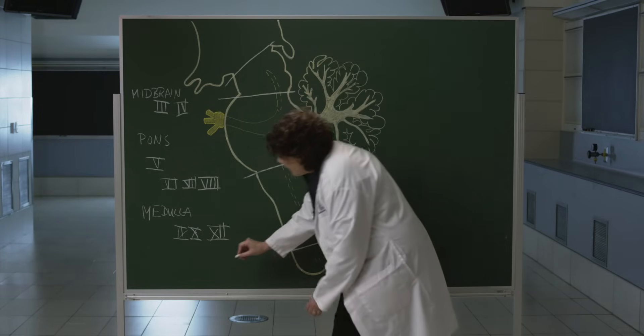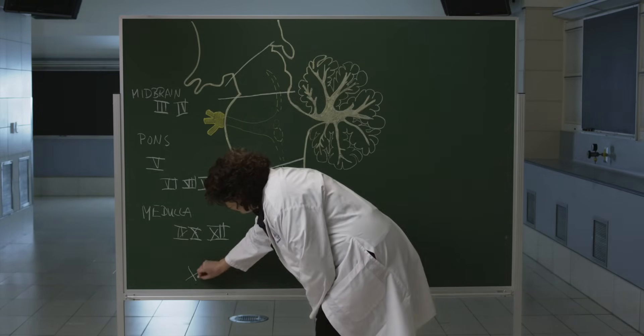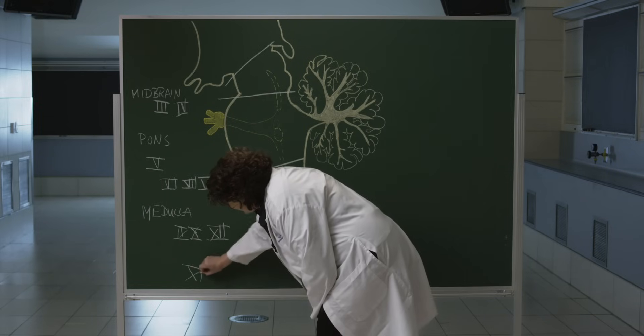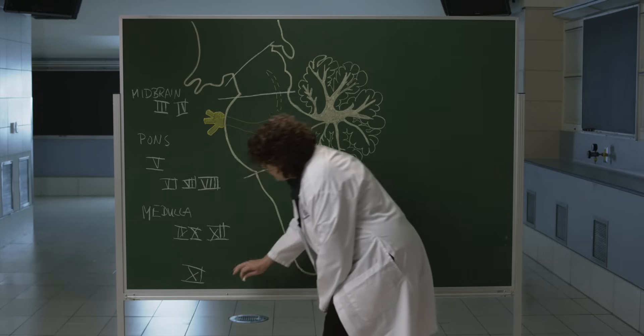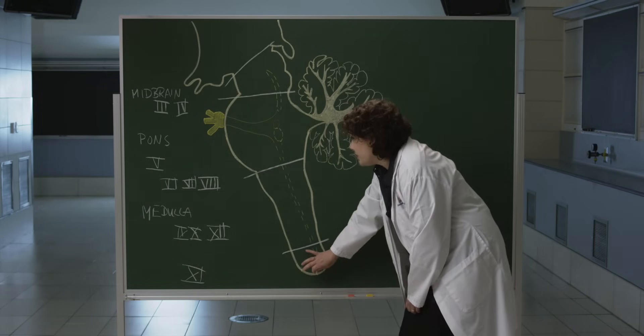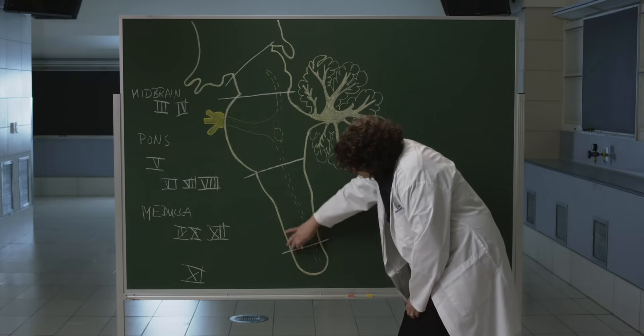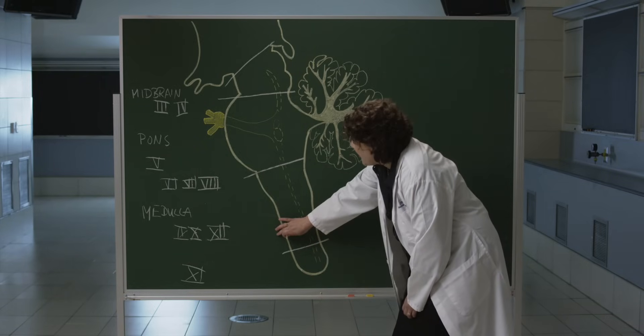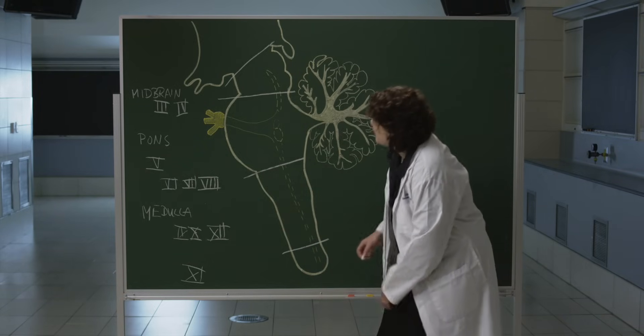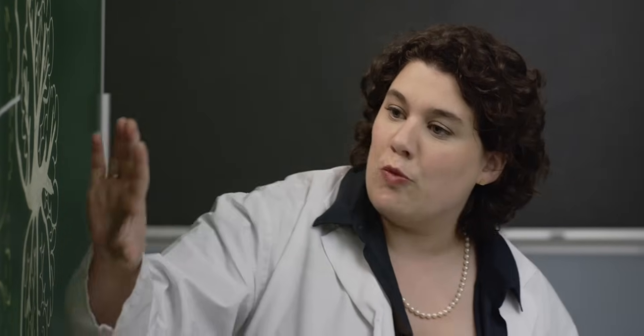Cranial nerve eleven actually emerges from the upper cervical levels of the spinal cord and sneaks into the skull through the foramen magnum. We're now going to have a closer look at cranial nerve five to really see how different nuclei make up one cranial nerve.